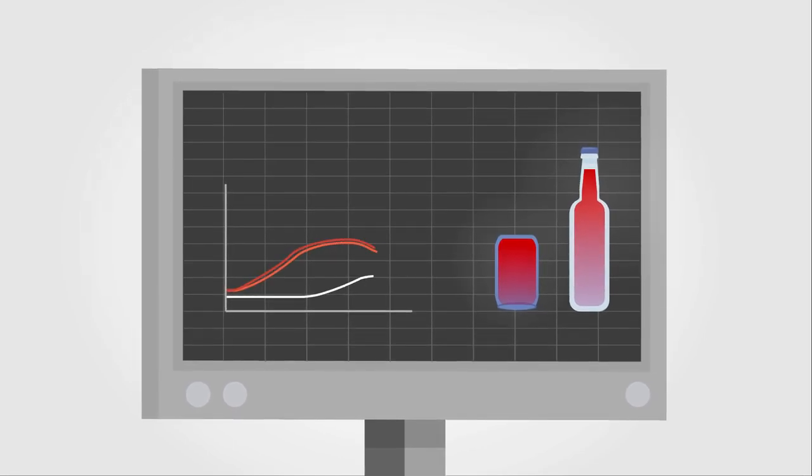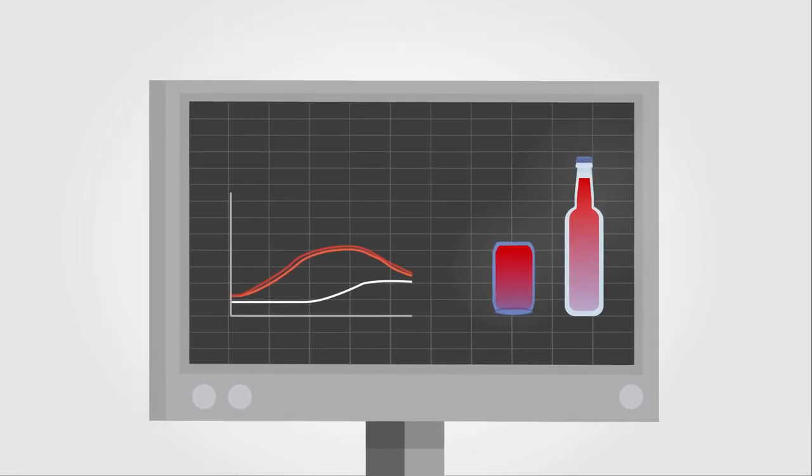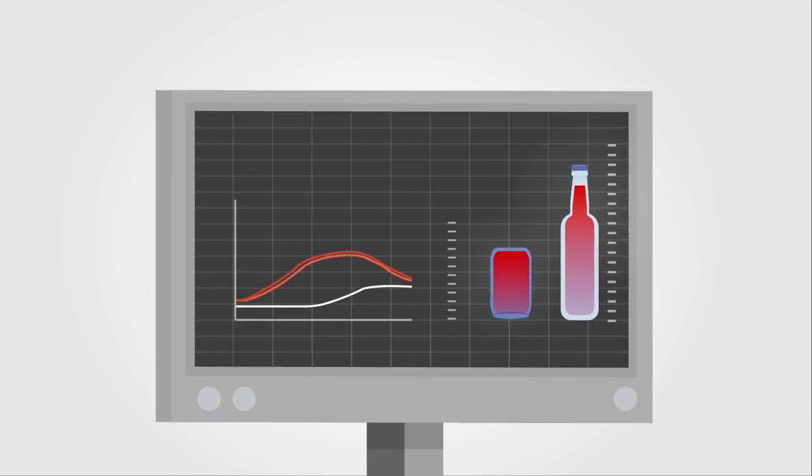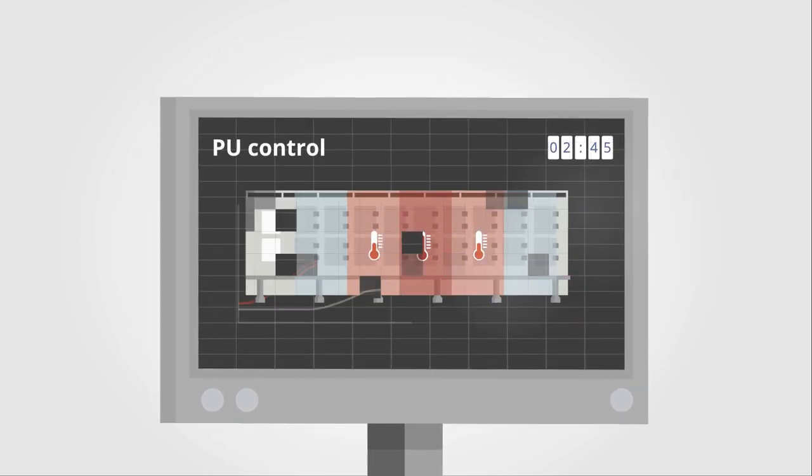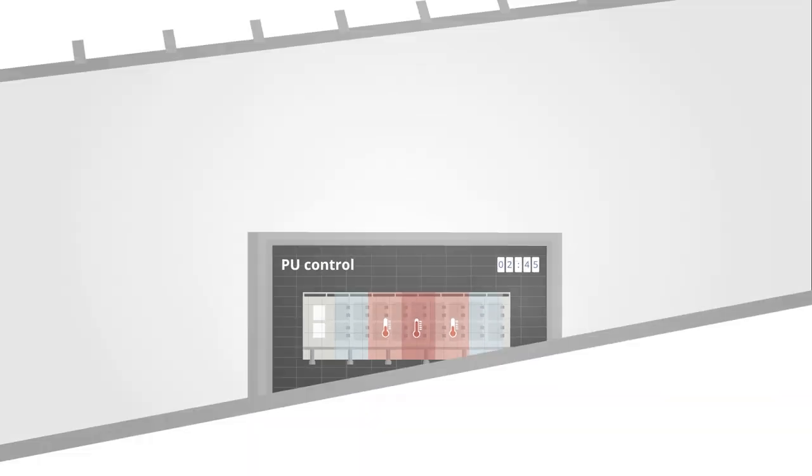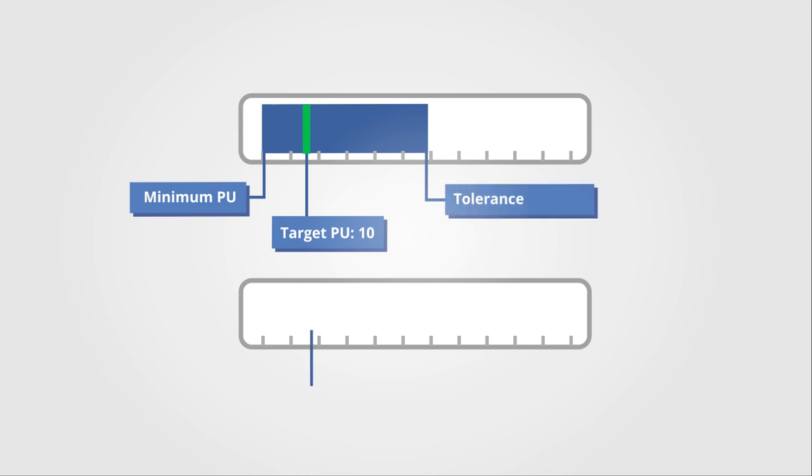However, based on container measurements taken in the KHS laboratory, the KHS PU control unit computes the optimum zone temperatures. This results in a certain PU tolerance range. If 10 PUs are required, for example, during pasteurization, the product achieves a maximum upper tolerance limit of 18 PUs.